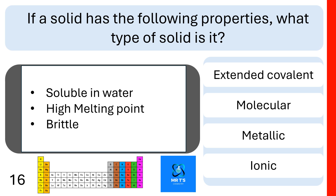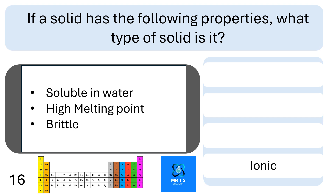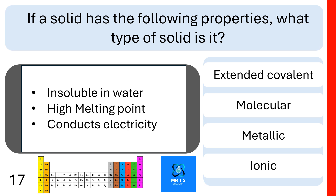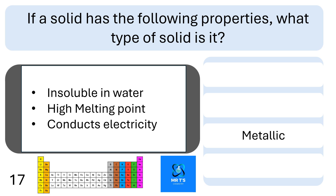If a solid has the following properties, what type of solid is it? So if it's soluble in water, high melting point, and brittle, is it extended covalent, molecular, metallic, or ionic? Well done if you identified it was ionic. Question 17. If a solid has the following properties, what type of solid is it? So it's insoluble in water, it has a high melting point, and it conducts electricity. Is it extended covalent, molecular, metallic, or ionic? If you put metallic down, then you're absolutely correct.